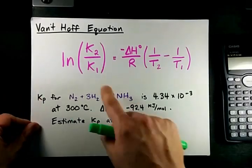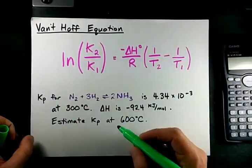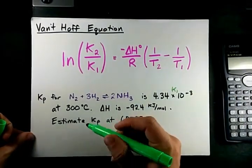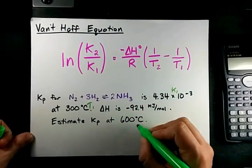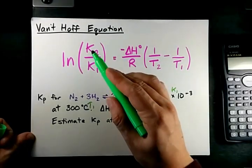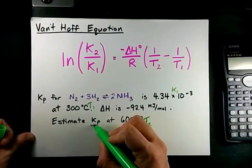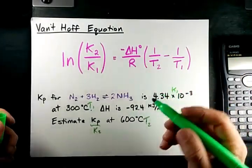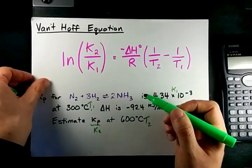All you need to do is fill the information in and solve for the other equilibrium constant. I'm going to choose that the equilibrium constant they gave me is K1, and the initial temperature they gave me is T1. The temperature that I want to calculate the new equilibrium constant at is going to be T2, and the new Kp is the K2 that I'm going to solve for. Delta H is delta H. I hope that's obvious. So let's fill these numbers into the equation and see what we can do.